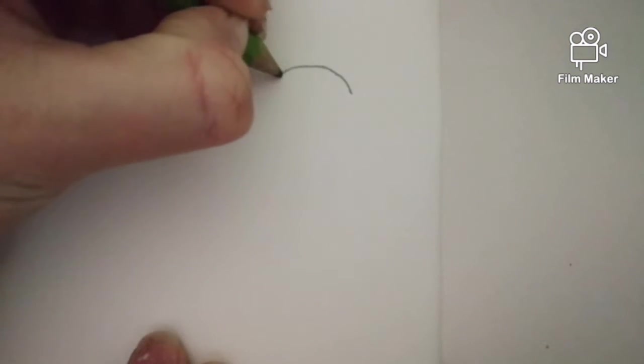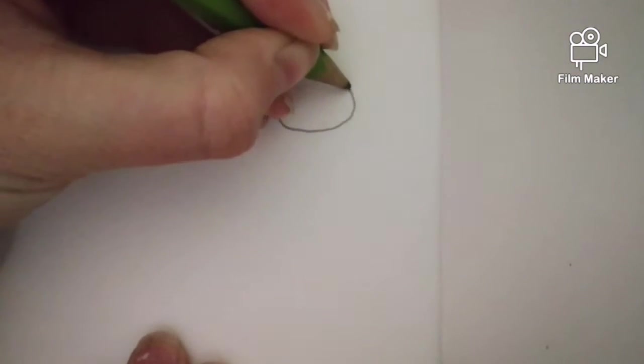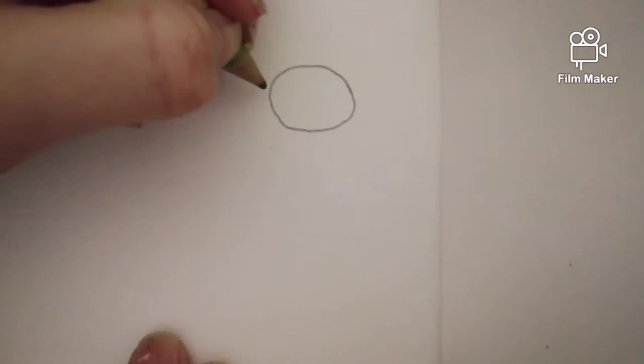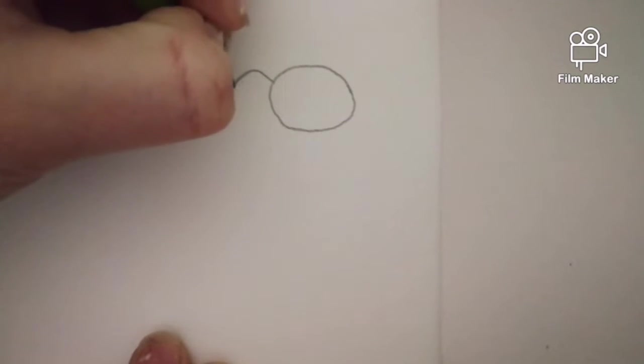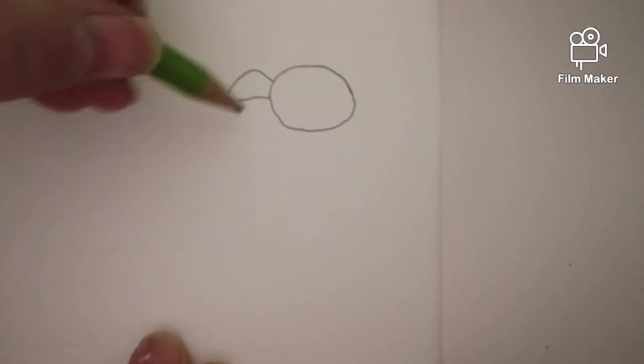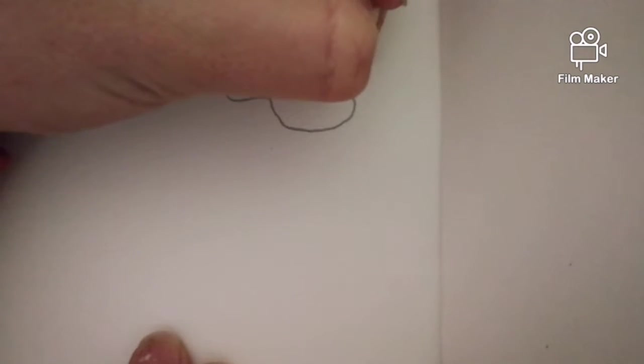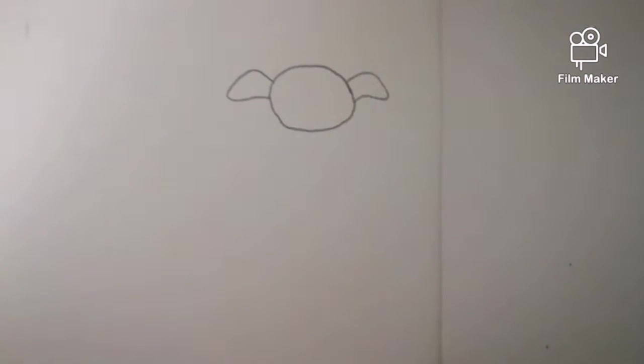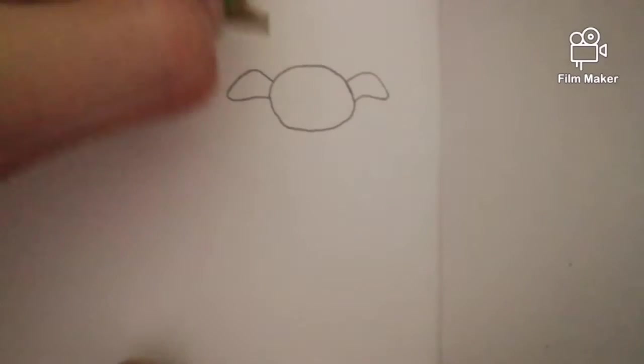I'm going to start by drawing an oval like this. Then you're going to draw kind of a triangle, sort of like a soft triangle ear like that, and the same on the other side. Also, it doesn't matter if they're the exact same because everything's not symmetrical in animals.